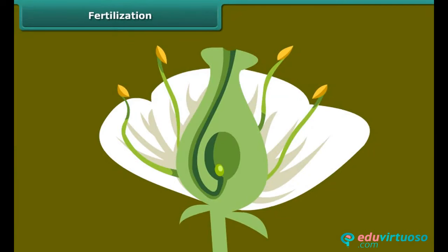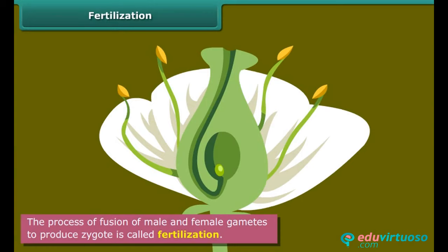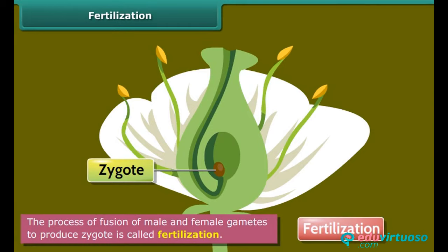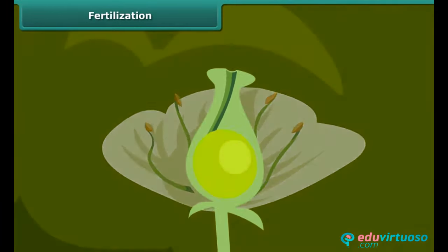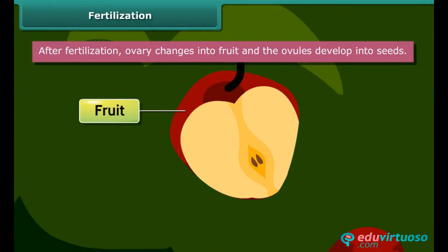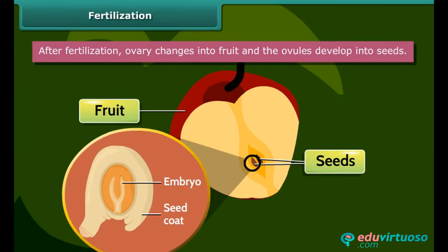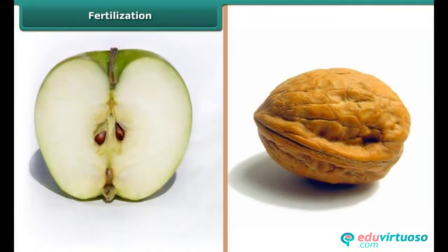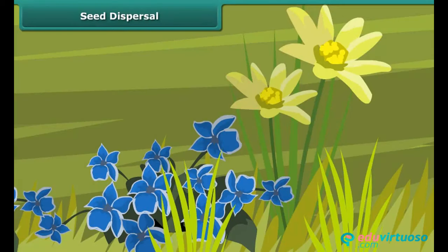Fertilization. When male and female gametes are fused together, a new cell is produced which is called a zygote. This process is called fertilization. After fertilization, ovaries change into fruit and the ovules develop into seeds. The seed contains an embryo enclosed in a protective seed coat. Fruit may be either fleshy or dry.